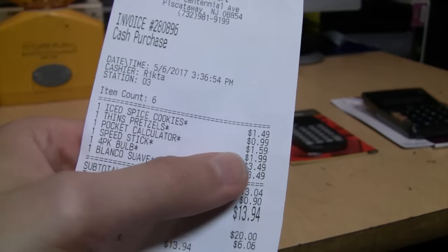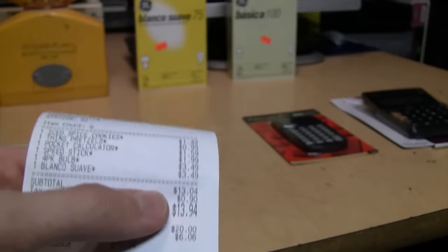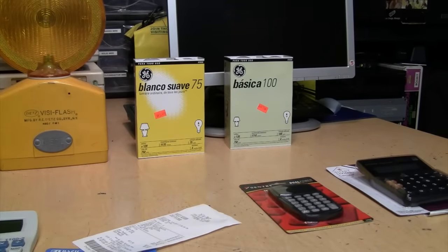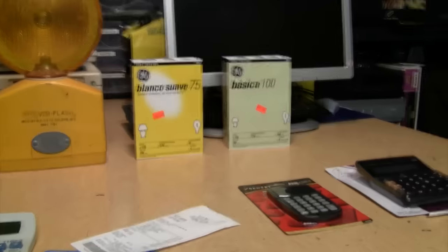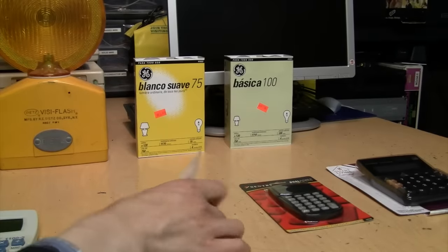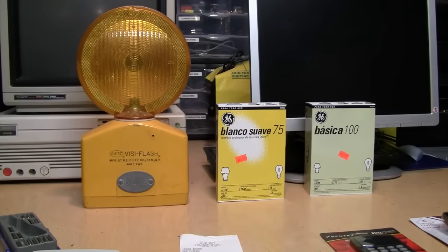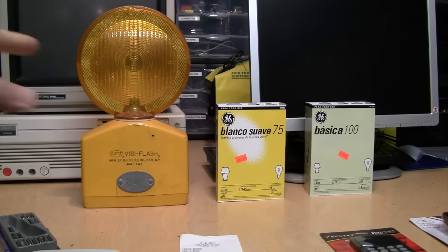Here's the receipt, pocket calculator $1.59. And the reason why these light bulbs are in the background is because they're still selling these not legal for US sale Spanish incandescent light bulbs. So I was surprised to see that and I picked up a few blanco suave and basica bulbs while I was there.